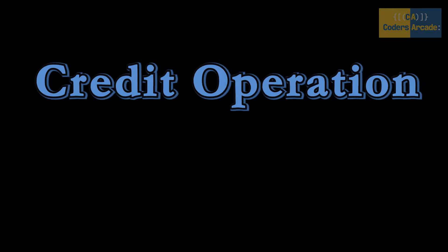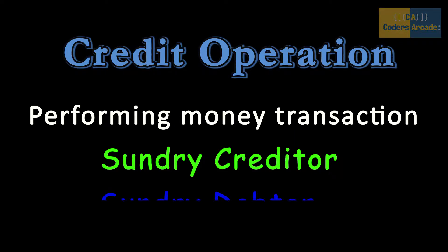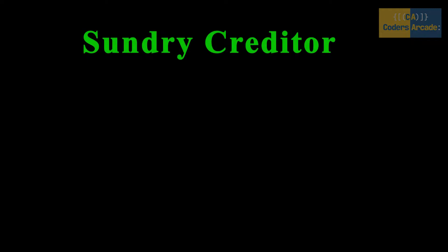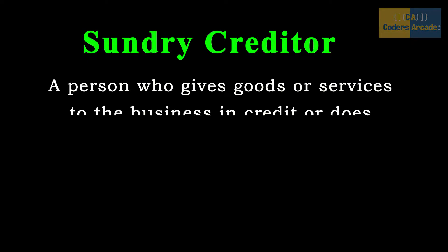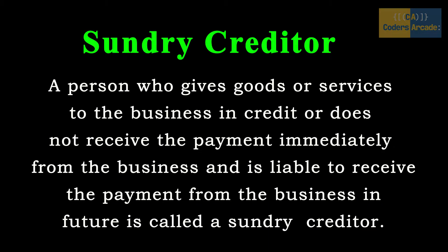Credit operation means performing any money transaction. That means it includes both creditor and sundry debtor. For example, if we purchase any asset such as computer, furniture or vehicle from any person or from any other company and if we don't make the payment immediately and where we are liable to make the same payment later on, it is known as sundry creditor.